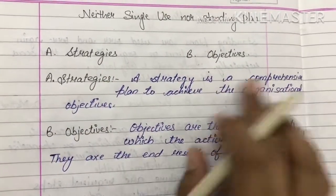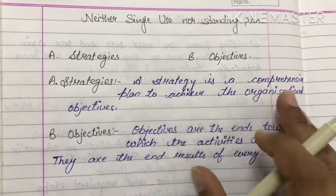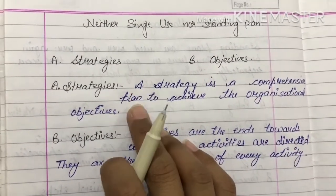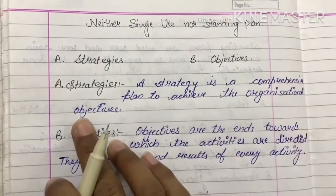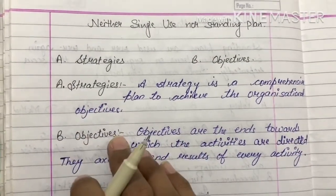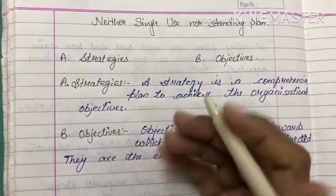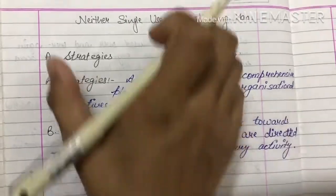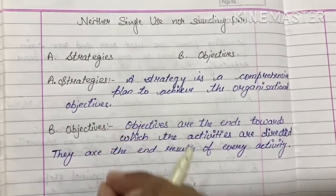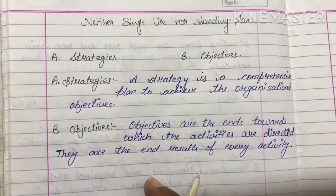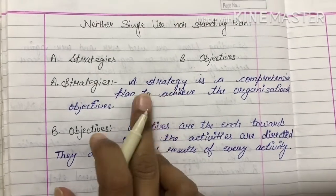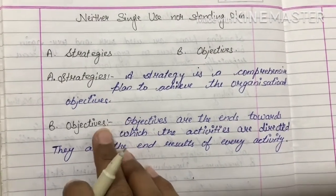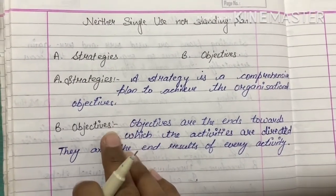A strategy is a comprehensive plan to achieve the organizational objective. यह comprehensive यानि detailed plan होता है, और इसीलिए बनाया जाता है ताकि हम organization के objectives को attain कर सकें. हर एक छोटे से छोटे step को हम उसमें consider करते हैं. Strategies इसीलिए बनाई जाती हैं ताकि हम उन objectives और aims को attain कर सकें जो हमने organization में decide किये हैं.